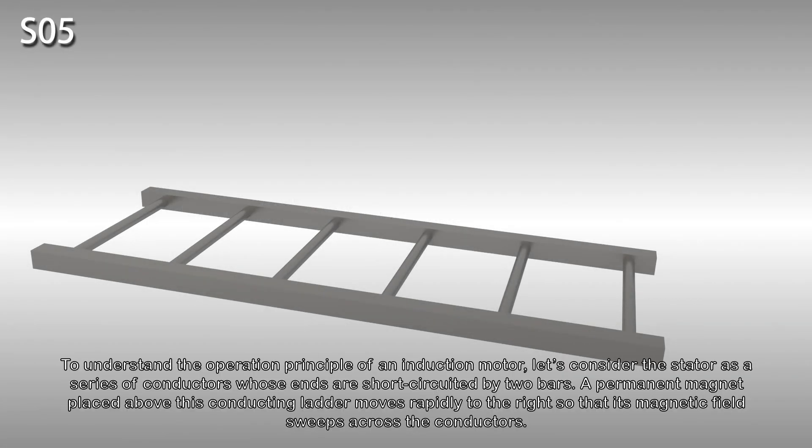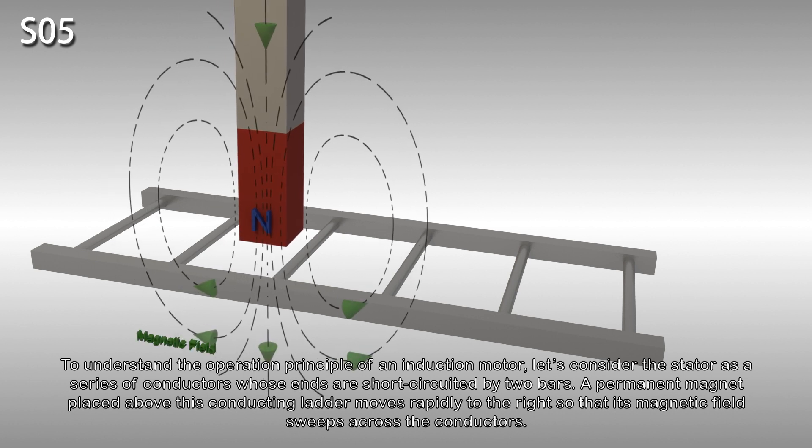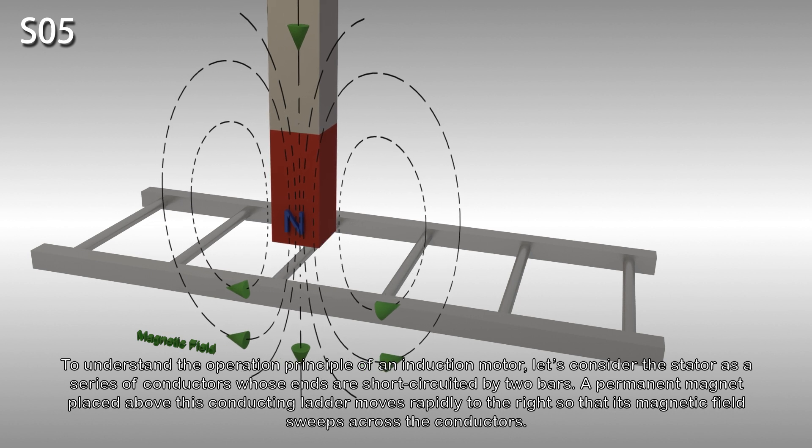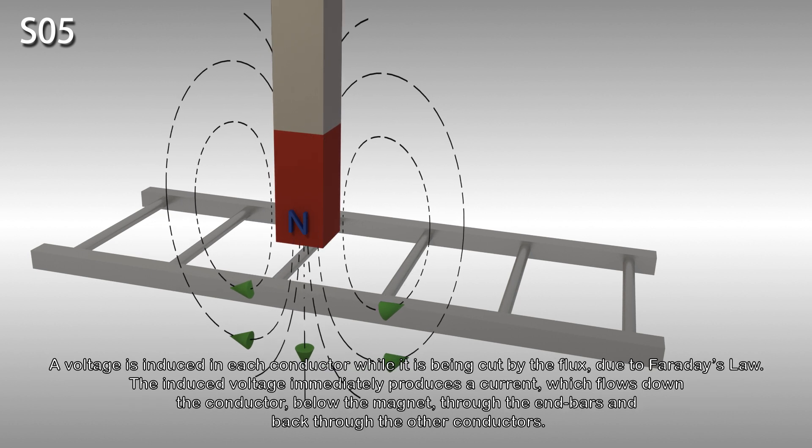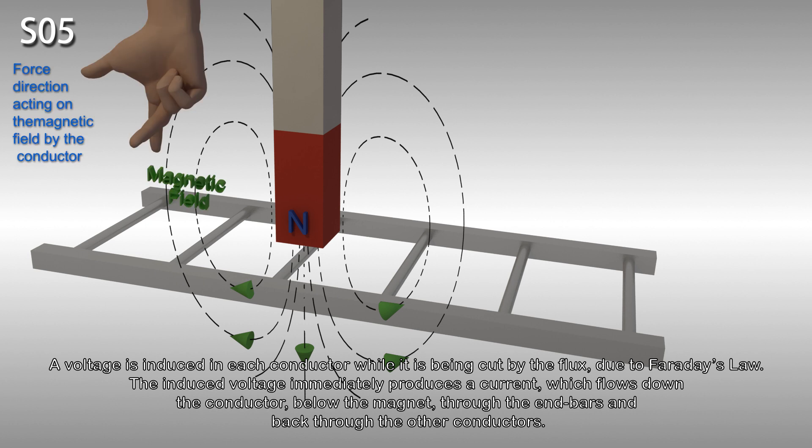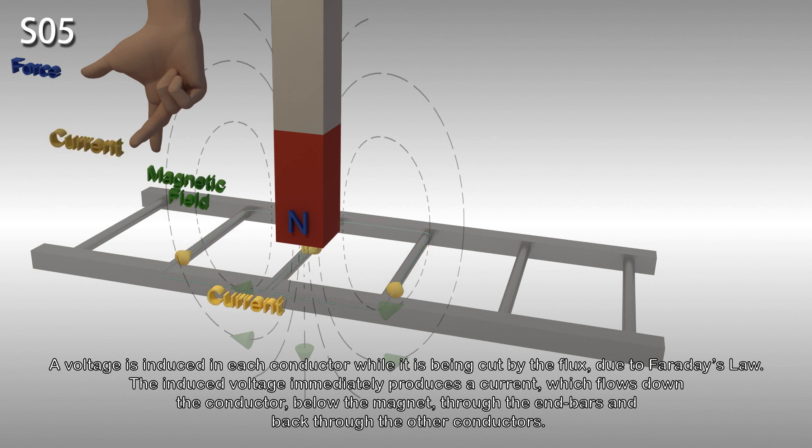To understand the operation principle of an induction motor, let's consider the stator as a series of conductors whose ends are short-circuited by two bars. A permanent magnet placed above this conducting ladder moves rapidly to the right so that its magnetic field sweeps across the conductors. A voltage is induced in each conductor while it is being cut by the flux due to Faraday's law. The induced voltage immediately produces a current which flows down the conductor, below the magnet, through the end bars, and back through the other conductors.